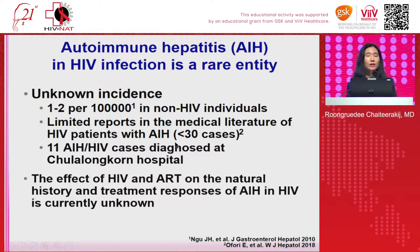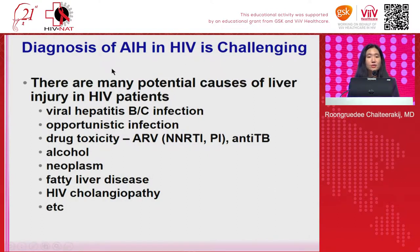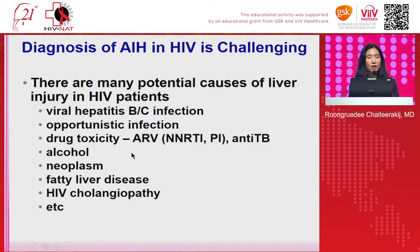Due to the very low number of cases, the effect of HIV and ART on the natural history and treatment response of AIH in HIV patients is currently unknown. The diagnosis of AIH in HIV is quite challenging, because there are many potential causes of liver injury in HIV patients. When we see HIV patients with abnormal liver function tests, we usually think of viral infection, opportunistic infection, or drug toxicity, rather than AIH.